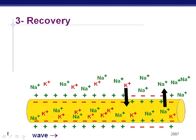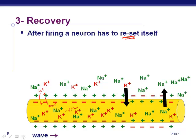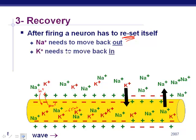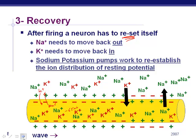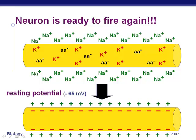Now we have the charges back to minus 65, but the problem is there's too much sodium inside — it won't diffuse back out on its own. So we need to get the sodium back out and the potassium back in to restart the neuron. After firing, the neuron must reset itself using sodium-potassium pumps, which actively use energy to pump sodium back out and potassium back in so we're ready to start another nerve impulse.